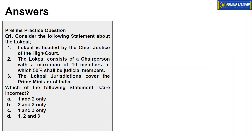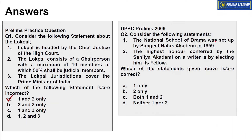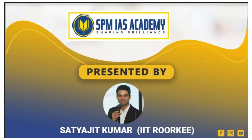Regarding the Lokpal practice question: the first statement is incorrect because Lokpal should be headed by a justice of the Supreme Court, not the High Court. The second statement is also incorrect — Lokpal should have eight members apart from the chairperson. The third statement is correct. Since the question asks which statements are incorrect, the answer is one and two only. The National School of Drama was set up in 1959 — absolutely correct — and the second statement is also correct, so the answer for that question is option C. That's all from our side for today, thanks for watching.